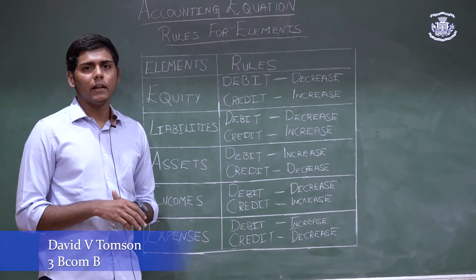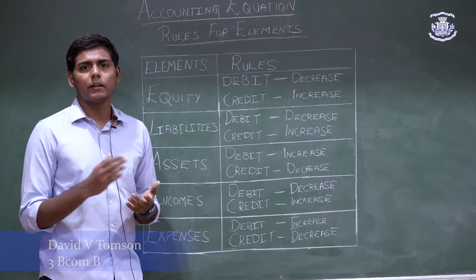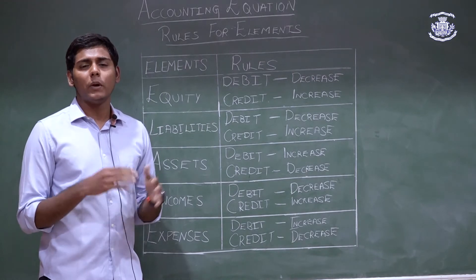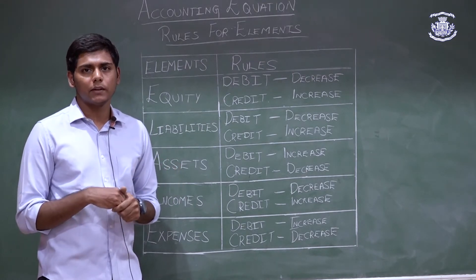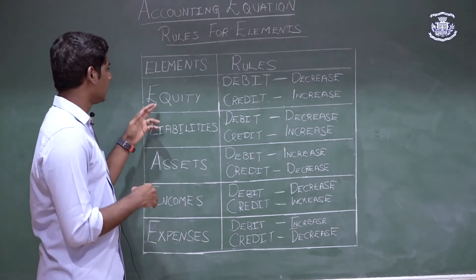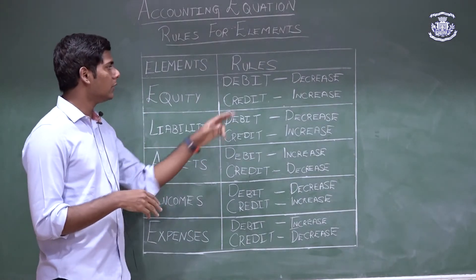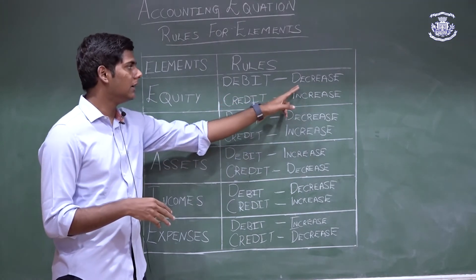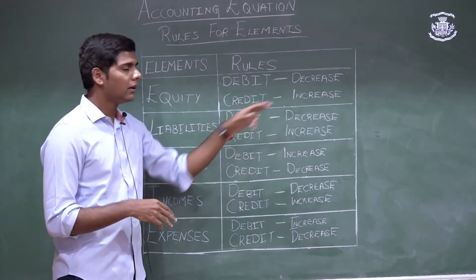We've seen the different elements and we know that every transaction has a debit and credit side to it. Now let's look at the rules for when you need to debit an element and when you need to credit a specific element. For equity, you need to debit equity when it decreases and credit equity when it increases.